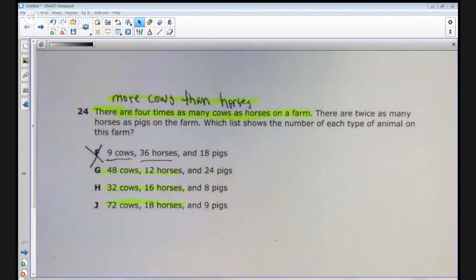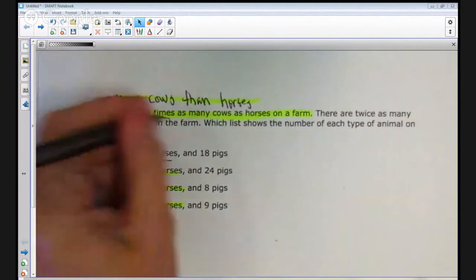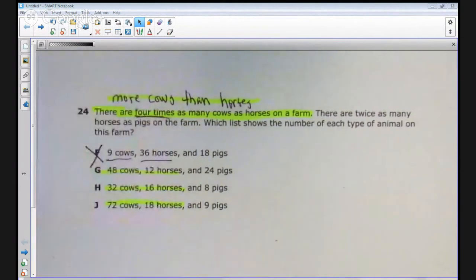Now, at this point, if they're looking at the four, four times as many, they could go ahead and eliminate answer choice F. But if they're not even reading that close, they would definitely get rid of answer choice F.